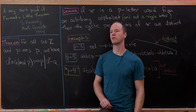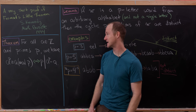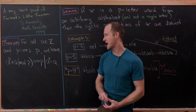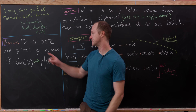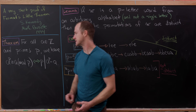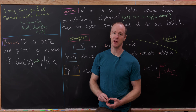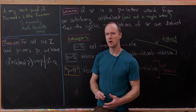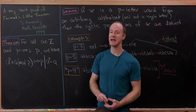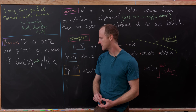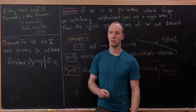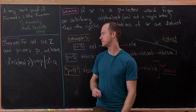So let's quickly recall what Fermat's Little Theorem says. It says for all integers a and primes p, we have a to the p is congruent to a mod p. Or in other words, p divides a to the p minus a, meaning that a to the p minus a is a multiple of p.